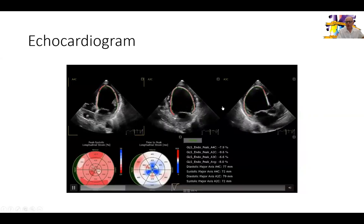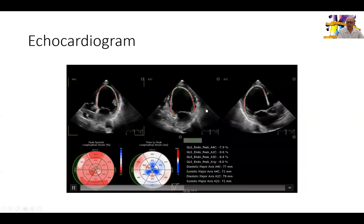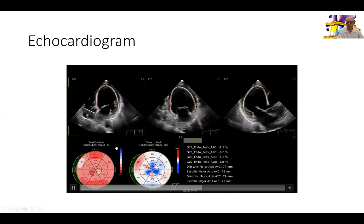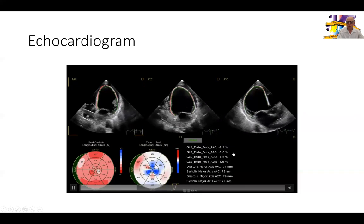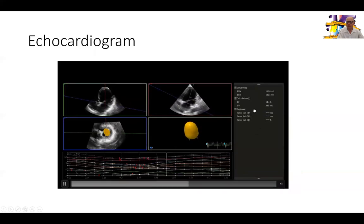She had an echocardiogram before she presented to us. You can see global left ventricular dysfunction, significant reduction in ejection fraction, left ventricular dilatation, and dyssynchrony with global reduction in longitudinal strain across all segments. Ejection fraction was calculated by 3D echo at 14.4%, with a very dilated ventricle and very large end-systolic and diastolic volumes.